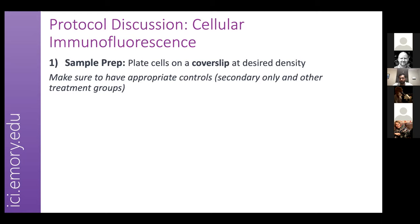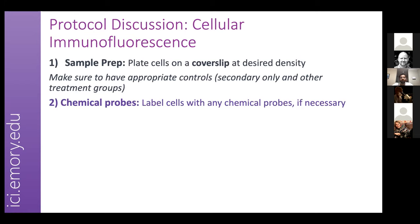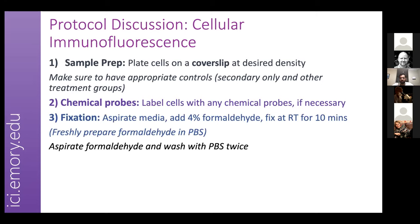Once cells are plated, make sure to include appropriate controls — these could be based on different treatments or a secondary-antibody-only control. If integrating chemical probes, make sure the probe is amenable to fixation, since many are not. For fixation, I typically use 4% formaldehyde in PBS, prepared fresh, which cross-links all proteins. Leave at room temperature, and prepare formaldehyde fresh each time.